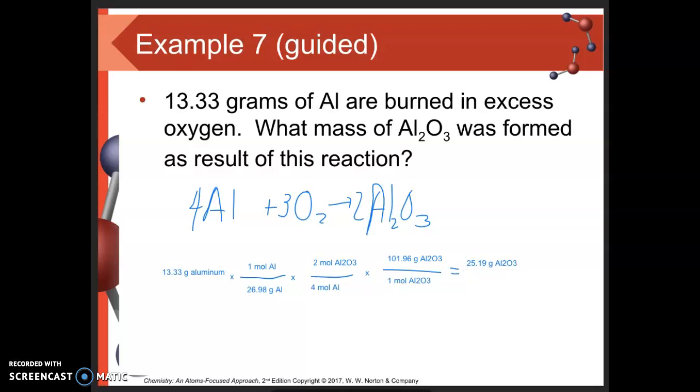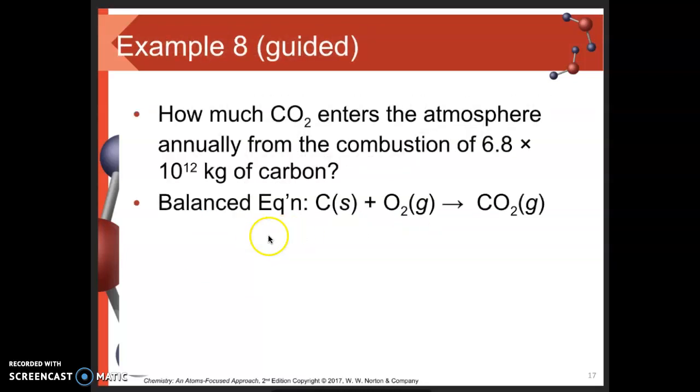Let's do one more example. How much CO2 enters the atmosphere annually from the combustion of 6.8 × 10^12 kilograms of carbon? I've got a balanced chemical equation and can follow the same process. I have a mass of carbon and want to turn it into an amount of carbon dioxide. It doesn't tell us we have to turn this into grams, but we will.